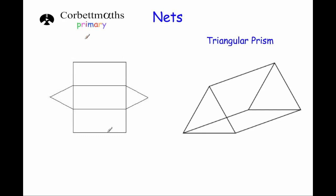The next net we're going to look at is the net of the triangular prism. Here we've got the triangular prism and here's the net. You can see the rectangle in the middle is the base. You've got the two triangles and the two rectangles which would all fold up to make the triangular prism. So this shape is the net of the triangular prism.